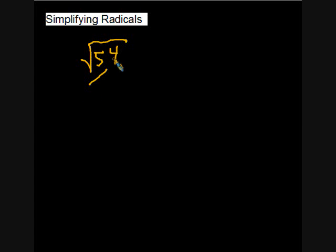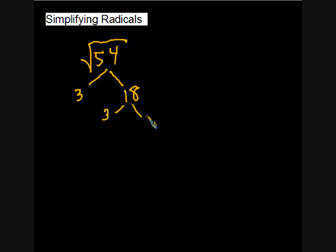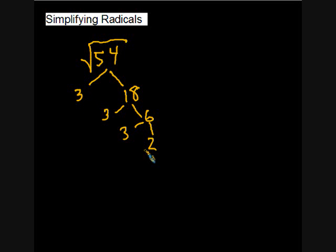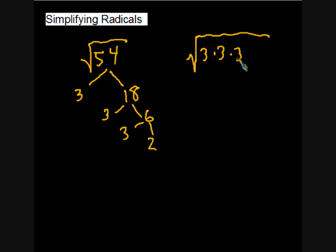For the square root of fifty-four, we could divide by two or by three. Dividing by three gives three times eighteen; divide by three again to get six; divide by three again to get two. You'd get the same prime factors regardless of where you start. The prime factors of fifty-four are three, three, three, and two — multiply them together and you get fifty-four. Now take the square root of fifty-four and write all the prime factors underneath.